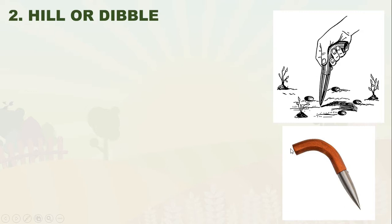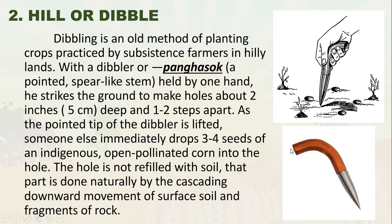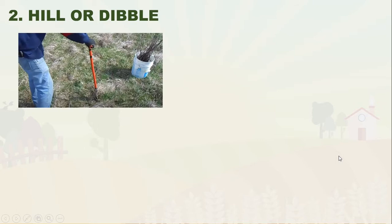The hill or dibbling method is an old method of planting practiced by subsistence farmers in hilly lands using a dibler or 'panghasop' — a pointed spear-like implement held by one hand that strikes the ground to make holes about two inches deep and one to two steps apart. Someone else immediately drops three to four seeds of open-pollinated corn into the hole. The hole is not refilled with soil; that is done naturally by the cascading downward movement of surface soil.